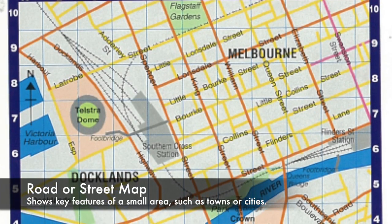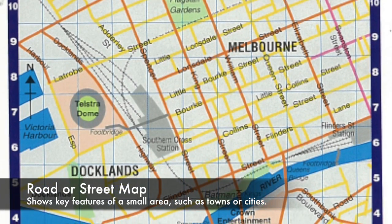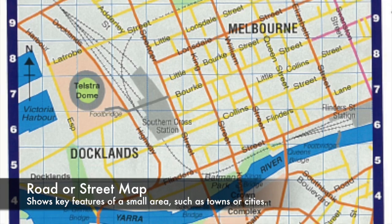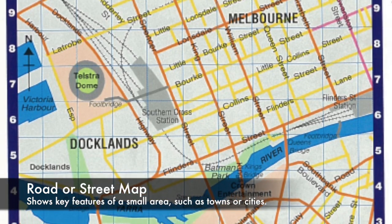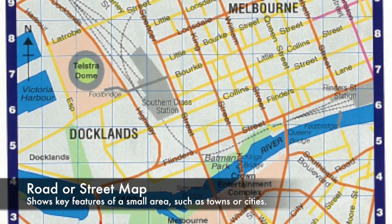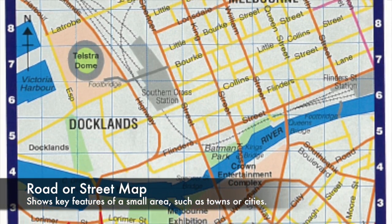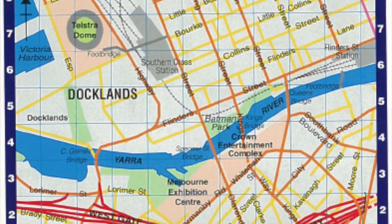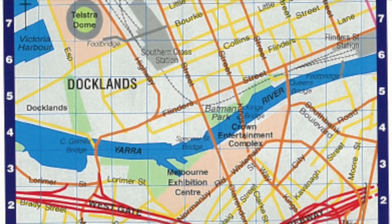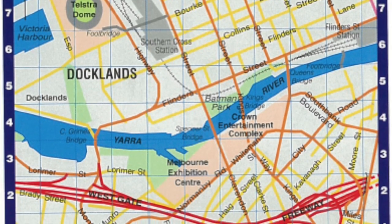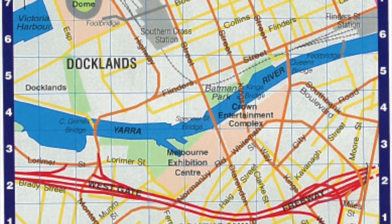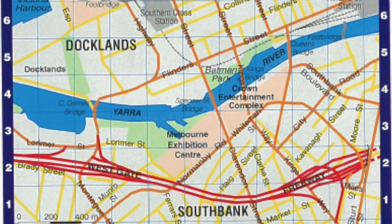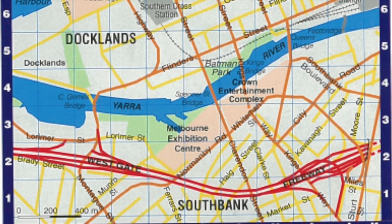The second type of map you need to learn about is a road or street map. These show key features such as roads, buildings, and parks of a small area such as towns or cities, and use an alphanumeric referencing system.